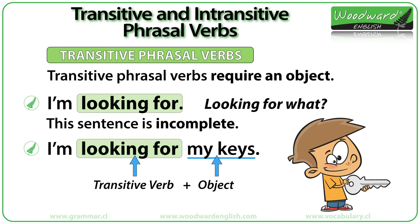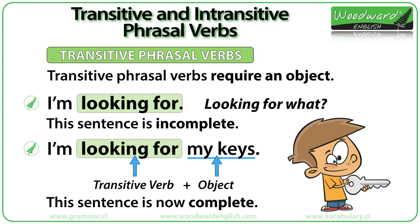Let's say that "my keys" is the object that I'm looking for: "I'm looking for my keys." Now the sentence is clear and makes sense. We needed to add an object after the transitive verb to make the sentence complete.